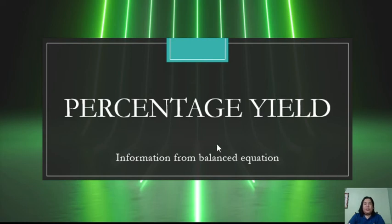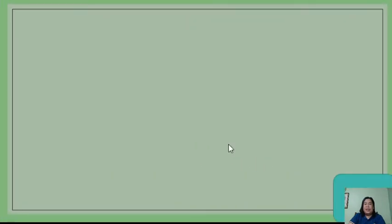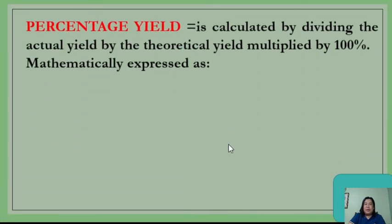Good day, dear STEM students. For today we'll be discussing the continuation of our previous lesson in limiting reactant. This is percentage yield. Percentage yield is calculated by dividing the actual yield by the theoretical yield, multiplied by 100, and mathematically expressed as: percent yield equals actual yield divided by theoretical yield times 100.